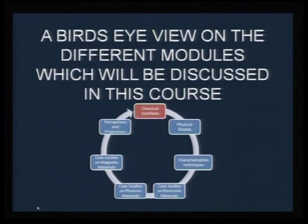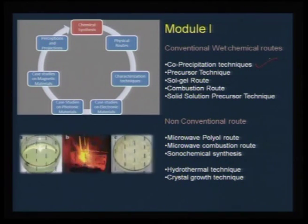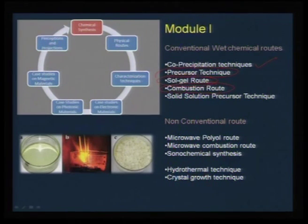Returning to the course design, this is a bird's eye view of the different modules. In module 1 on chemical synthesis, we will look at both conventional and non-conventional chemical routes. Under conventional chemical routes, we will cover co-precipitation technique, precursor technique, sol-gel technique, combustion technique, and solid solution precursor technique — which is a very competitive and emerging technique in the recent past.